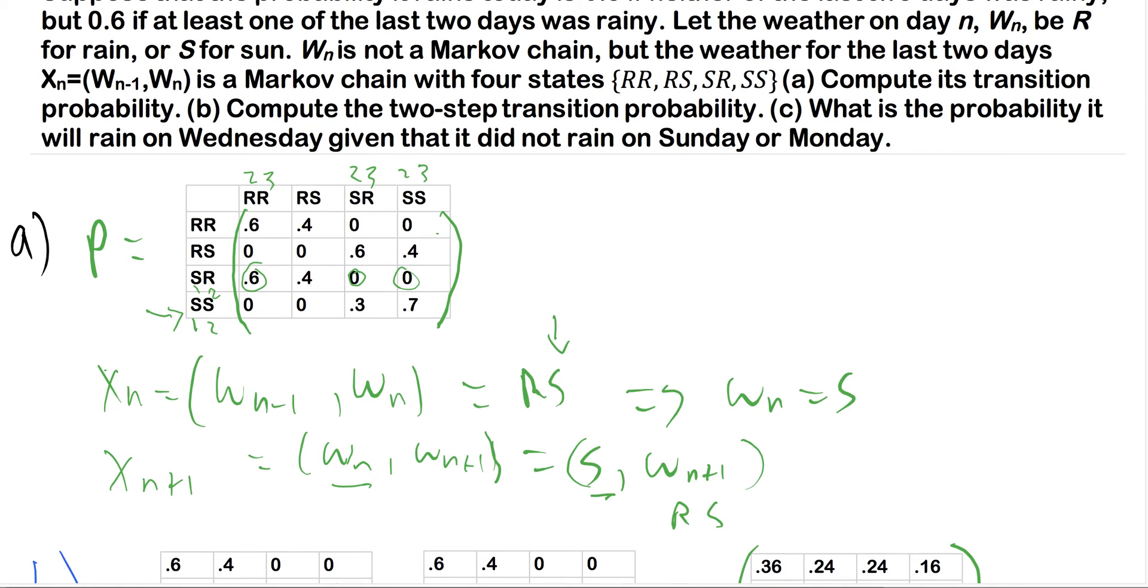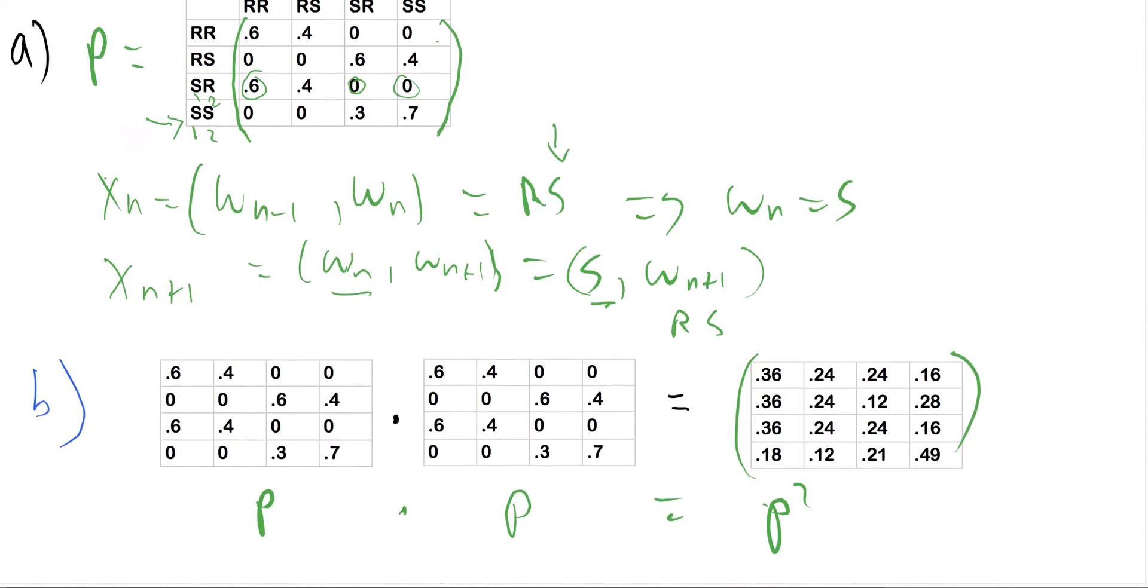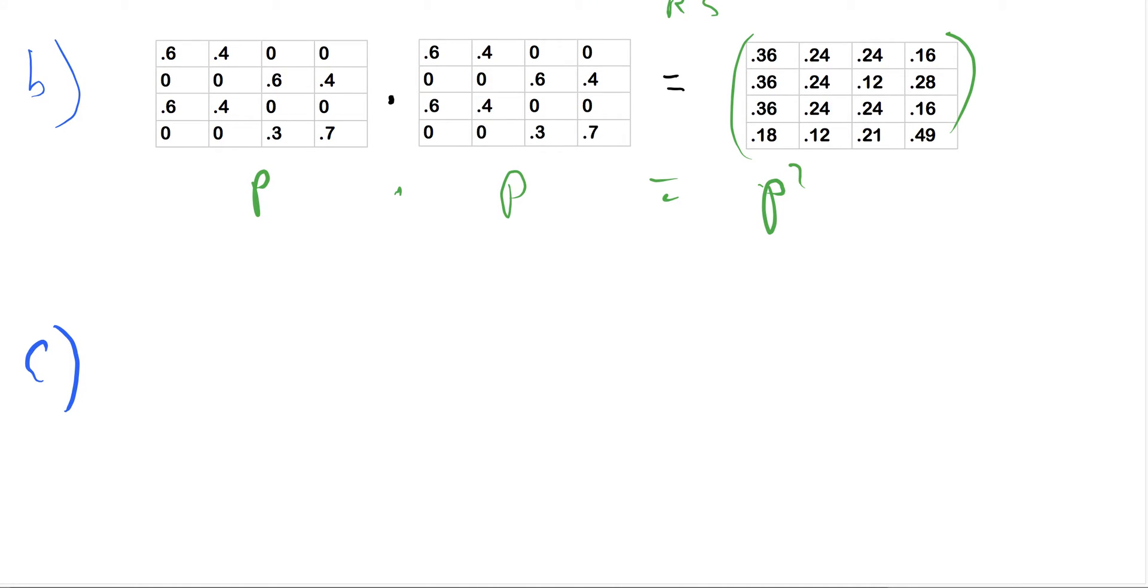Now for part C, it says, what is the probability it will rain on Wednesday given that it did not rain Sunday or Monday? Now this is a little bit confusing. Do we need the two-step transition probability from Monday to Wednesday? Do we need a three-step transition probability from Sunday to Wednesday? So I'm going to note here that X1 refers to Sunday, Monday.